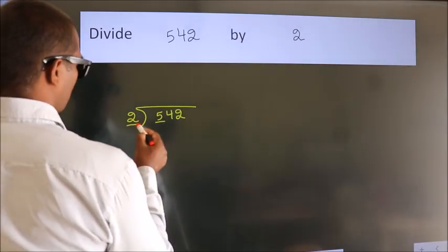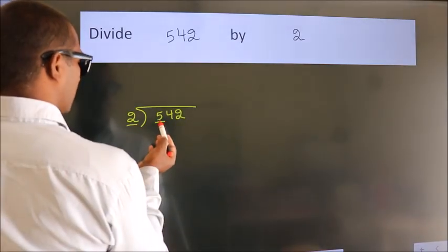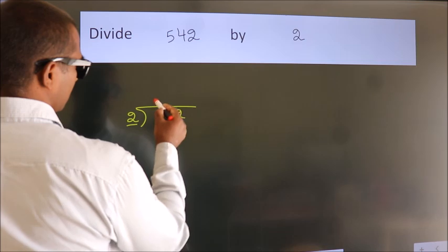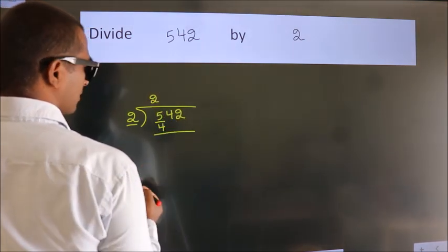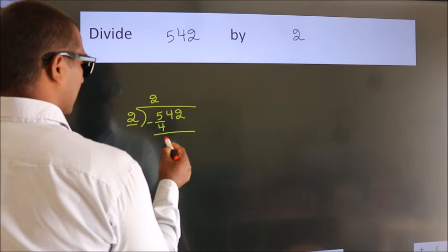Here we have 5. Here 2. A number close to 5 in 2 table is 2 2's 4. Now we should subtract. We get 1.